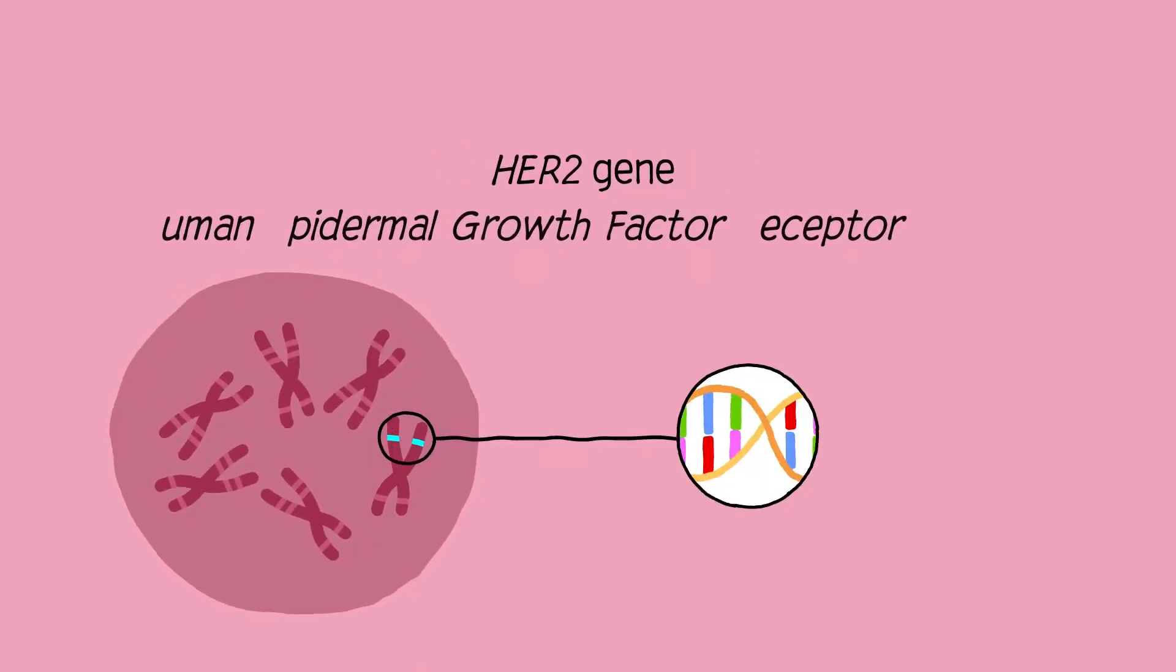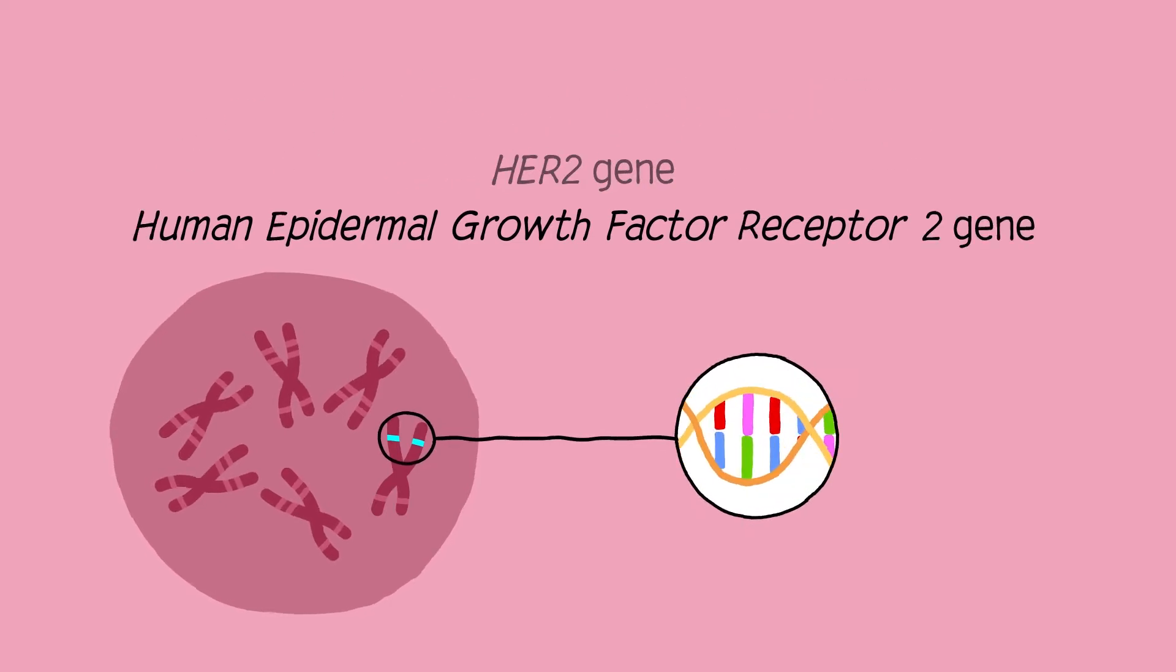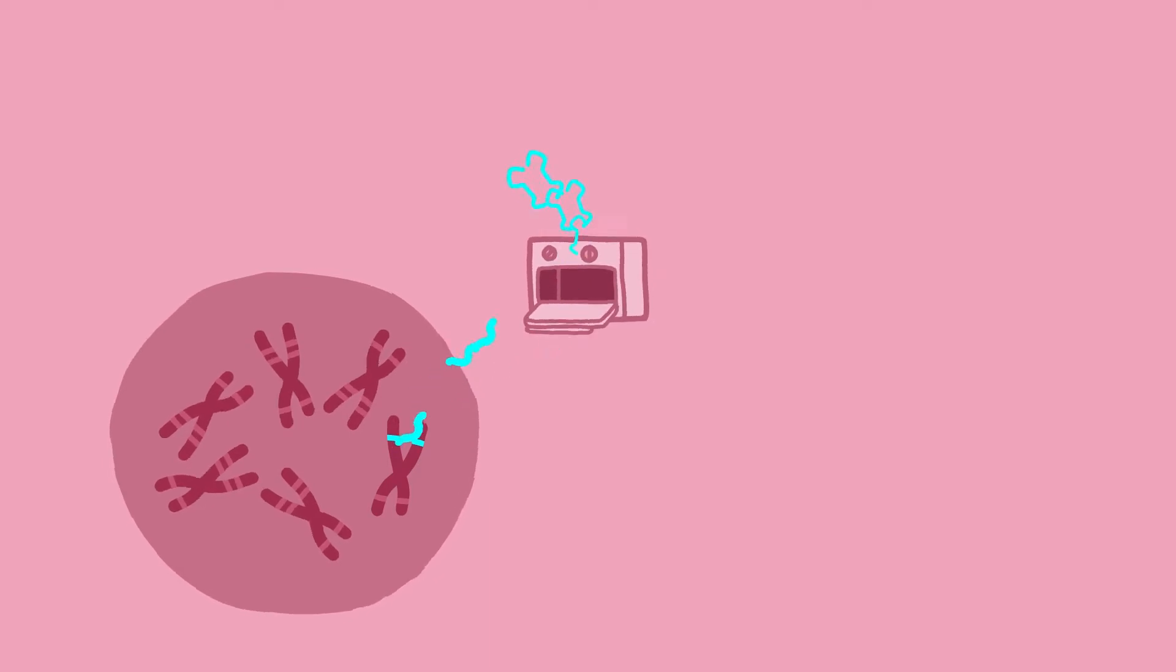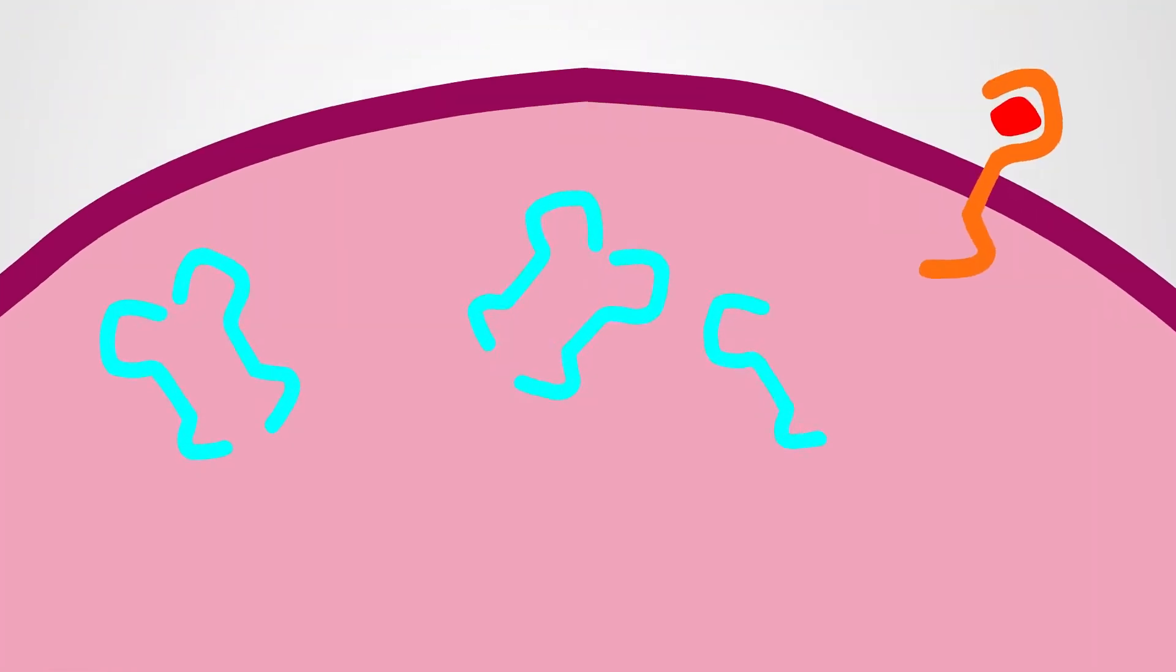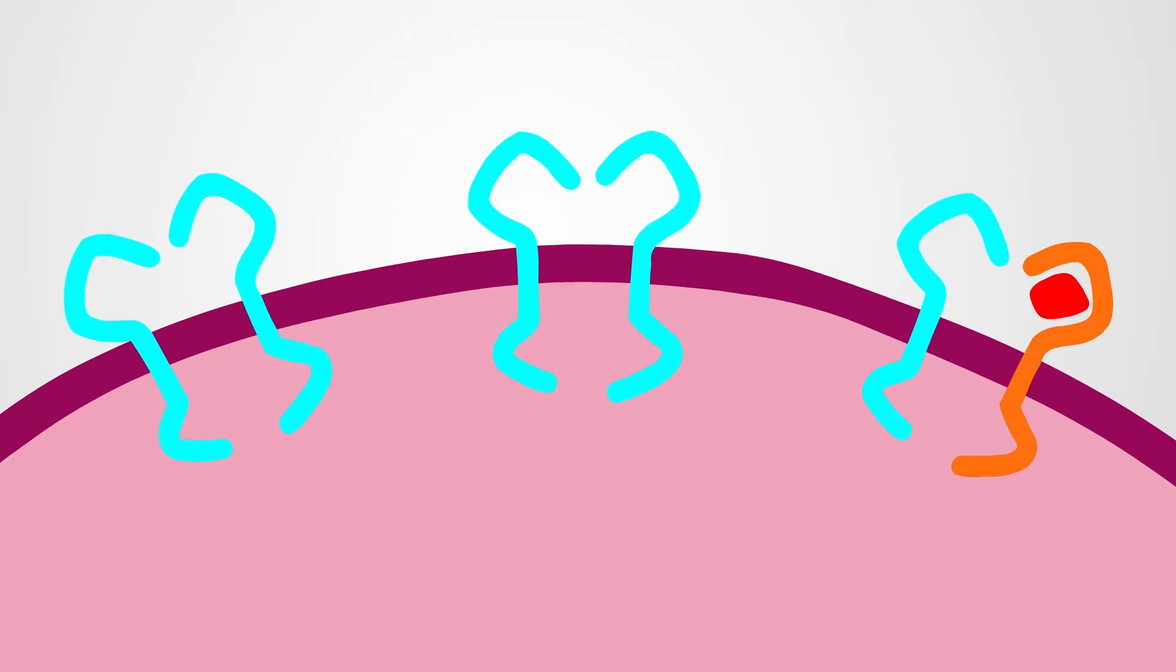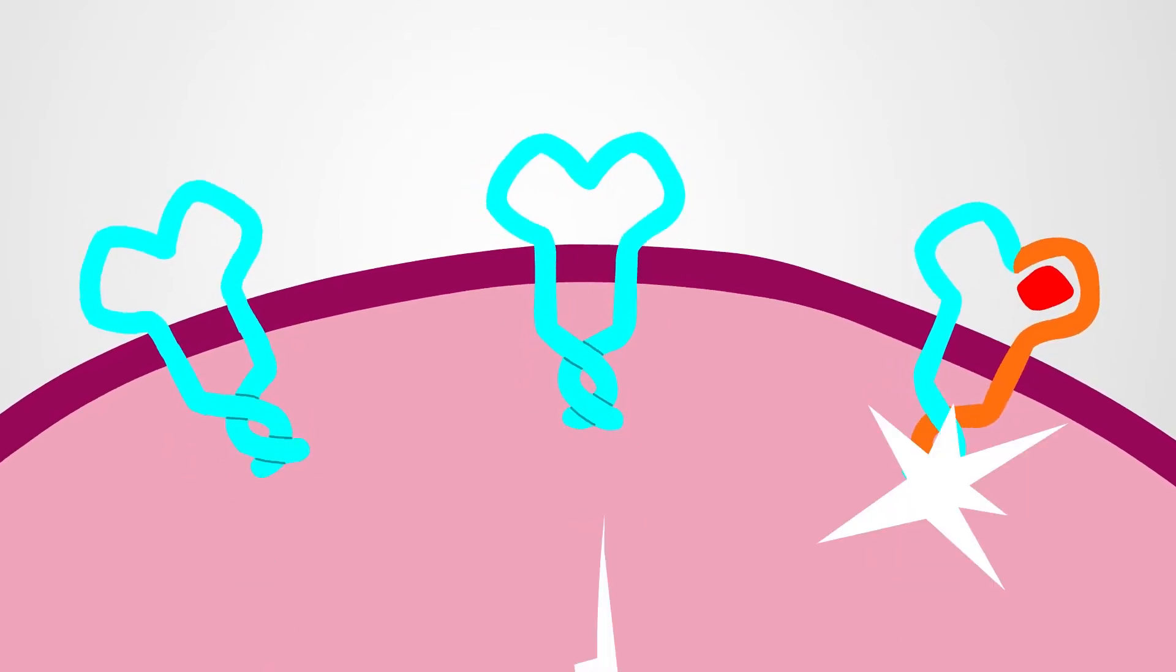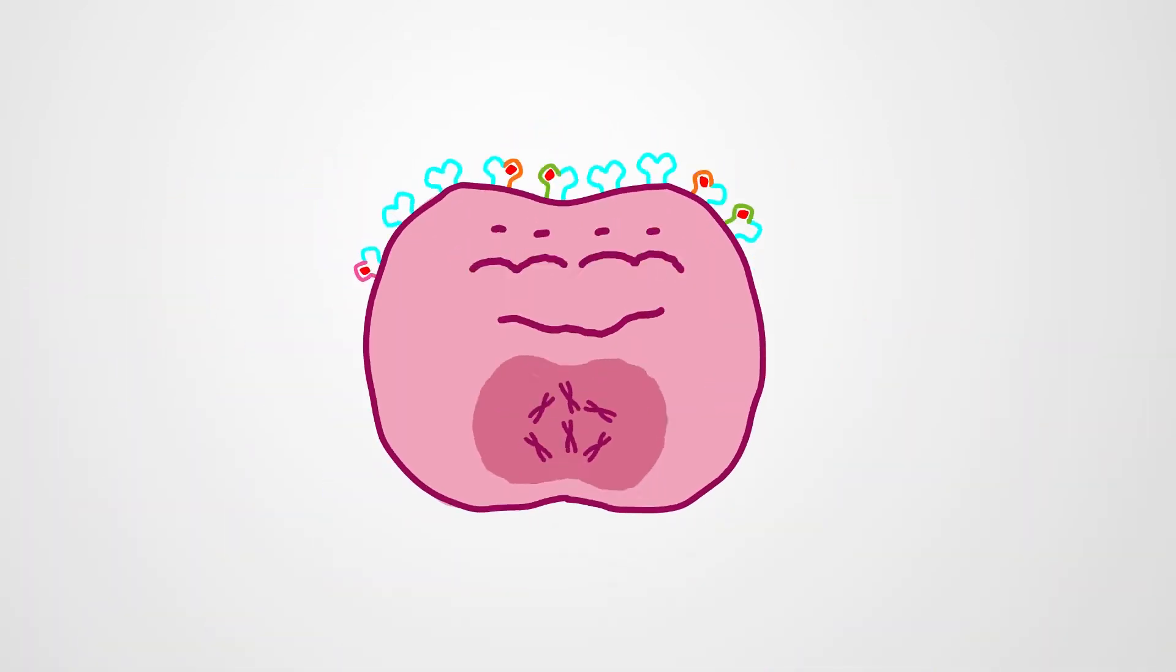The HER2 gene, short for Human Epidermal Growth Factor Receptor 2 gene, provides the recipe for making the HER2 protein, a receptor that sits within the surface of certain cells. When these receptors pair up, they generate a signal that can tell a cell to divide.